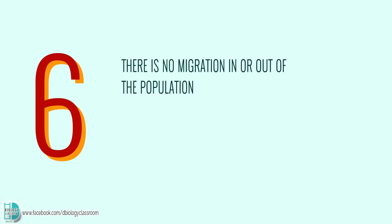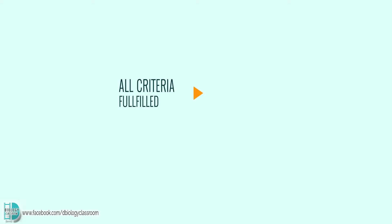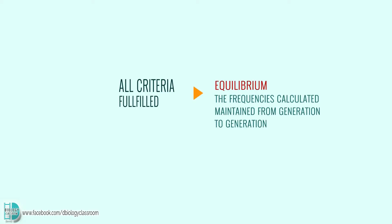Number six, there is no migration in or out of the population, meaning there is no change in population size. The fulfillment of these criteria ensures equilibrium, thus allowing the frequencies calculated using the formula to be maintained.